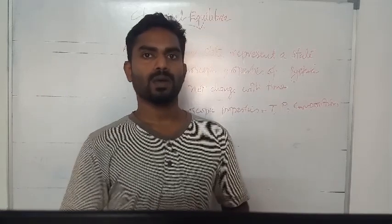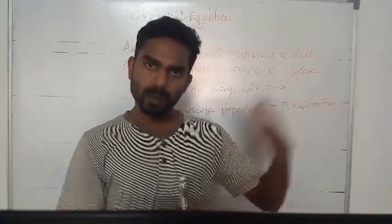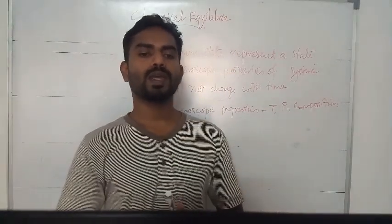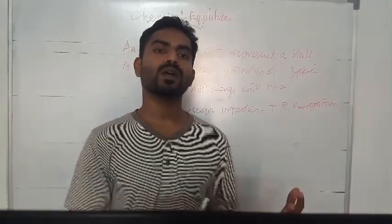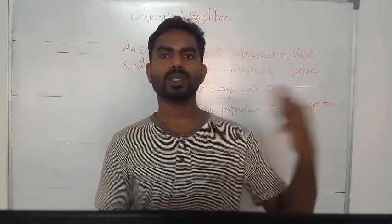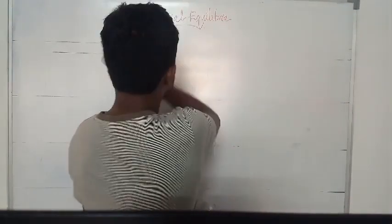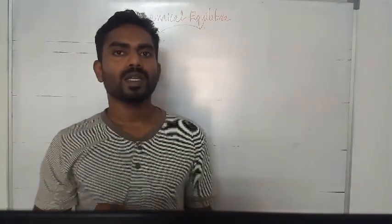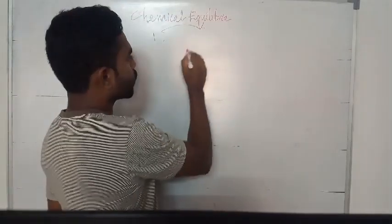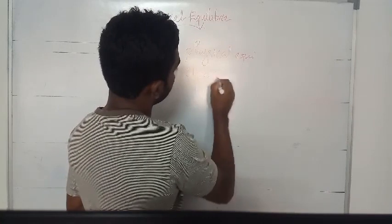The equilibrium state involves opposing reactions — a forward reaction and a backward reaction. Such a state can be called true or stable equilibrium. The system can be achieved by approach from either direction — forward or backward. This is called the equilibrium state and chemical equilibrium state.